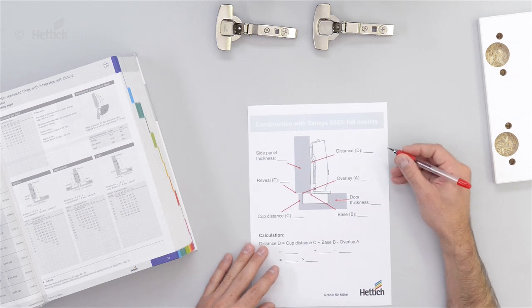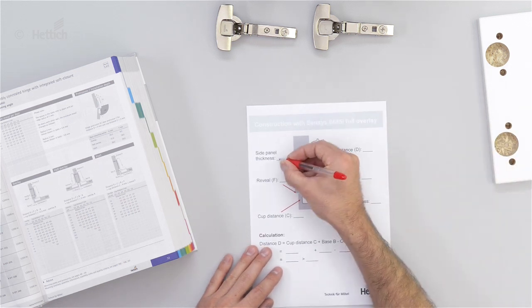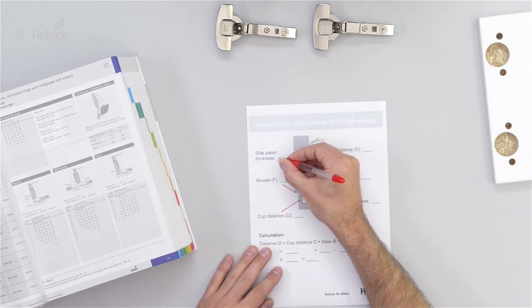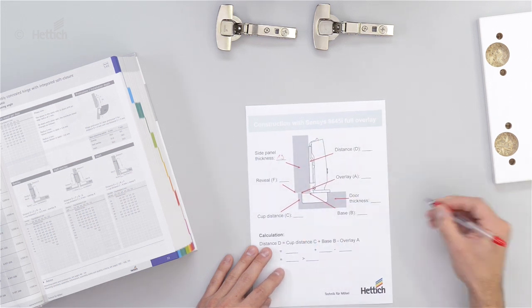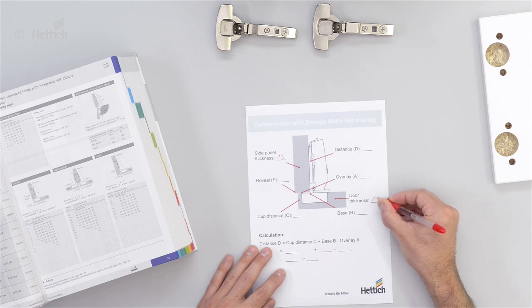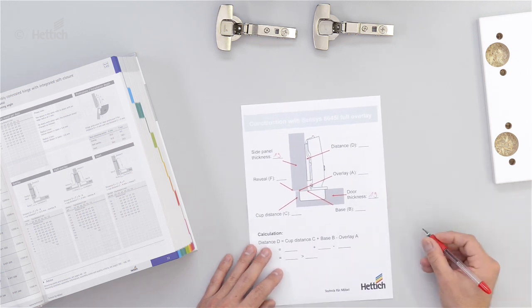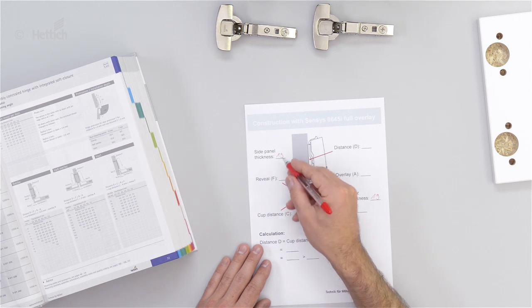So in this example we calculate with a side panel thickness of 19mm and a door thickness of also 19mm. And we say the reveal is 3mm.